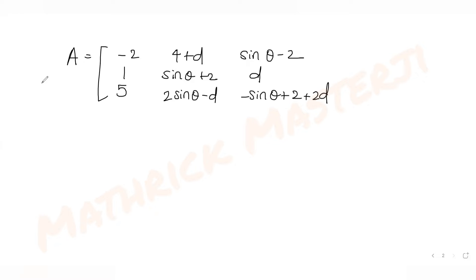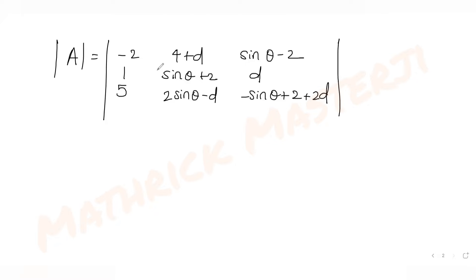Instead of working with the matrix directly, let's find the determinant of A. To do that, I'll apply a row transformation to make the first row become [1, 0, 0]. I'll apply R1 → R1 + R3 - 2R2.